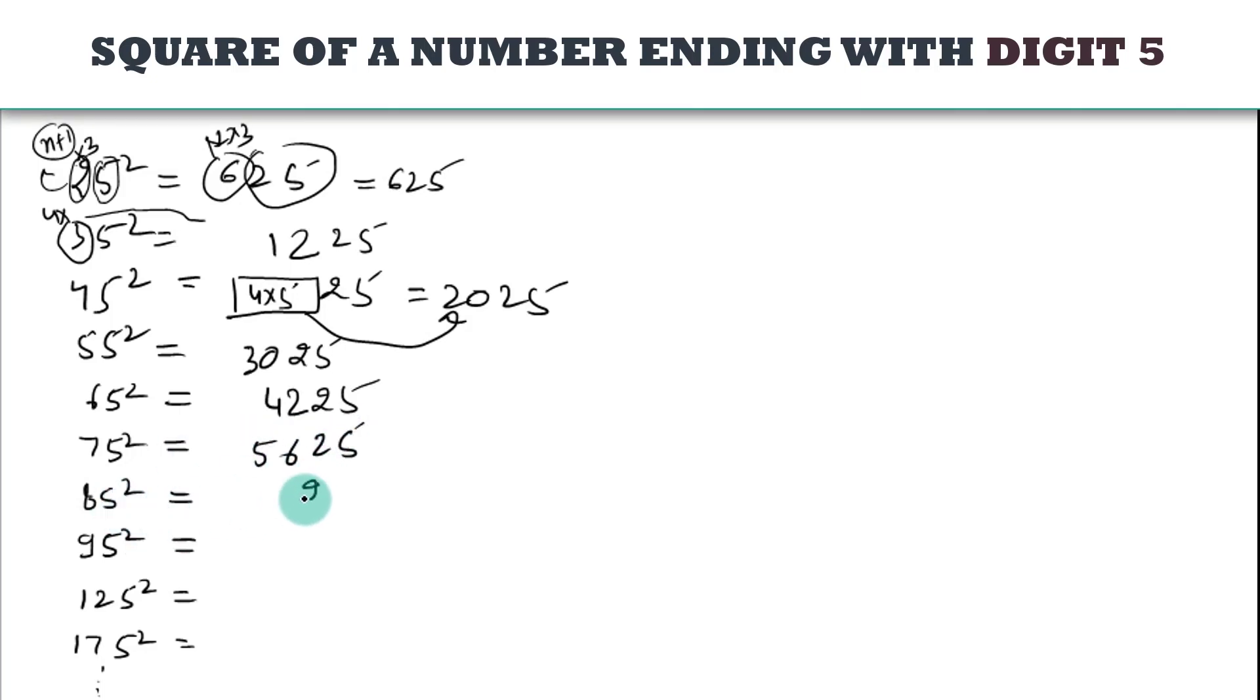85, you will get 25, 5 square 25, 8 plus, 8 into 8 plus 1 is 9, 9 times 8? 72, 7225.